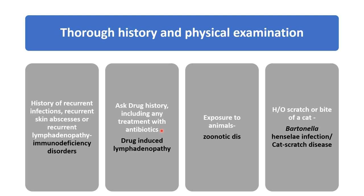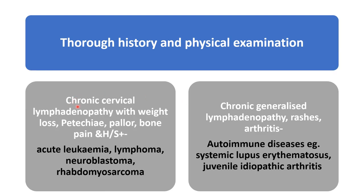Check drug history including treatment with antibiotics or anticonvulsants — drug-induced lymphadenopathy can be ruled out. If there is exposure to animals, consider zoonotic disease such as brucellosis, in which the patient will have lymphadenopathy, fever, and hepatosplenomegaly. If there is a history of a cat scratch or bite, rule out cat scratch disease caused by Bartonella henselae infection. If the patient has chronic cervical lymphadenopathy with weight loss, petechiae, bone pain, and hepatosplenomegaly, rule out malignancy — leukemia, lymphoma, neuroblastoma, or rhabdomyosarcoma. If the patient has chronic generalized lymphadenopathy with rashes and arthritis, consider autoimmune diseases such as SLE or JIA.